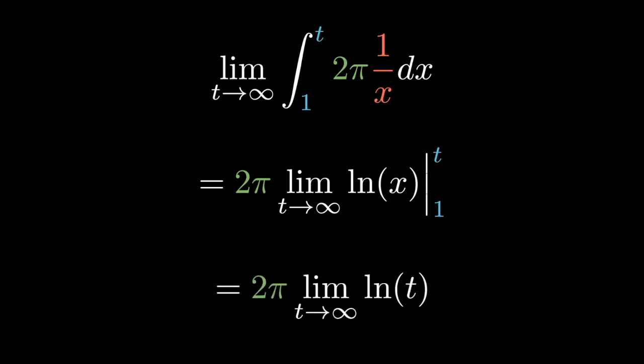the limit is equal to the limit as t approaches infinity of 2π ln(t). Which diverges. And thus, Gabriel's horn has infinite surface area.